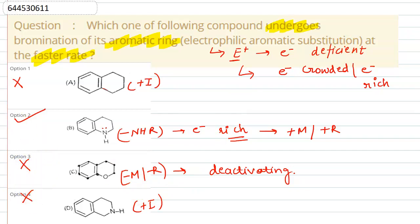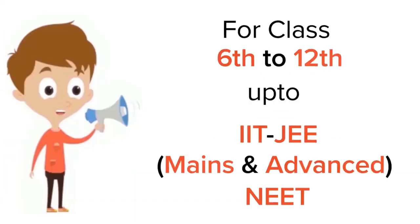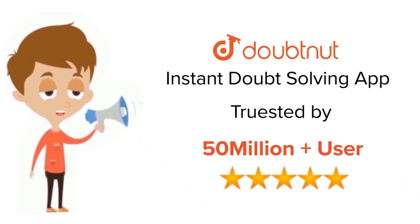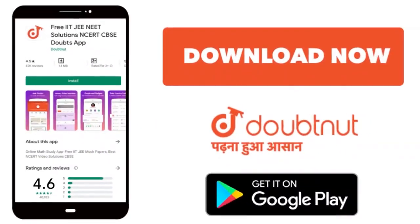So the correct option we have is option number two and this is the answer due to the presence of an electron rich group showing plus M and plus R effect. For class 6 to 12th, IIT-JEE and NEET level, trusted by more than 5 crore students, download DoubtNet app today.